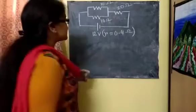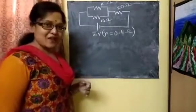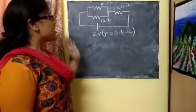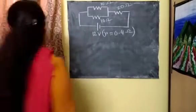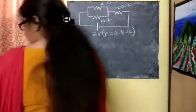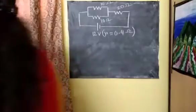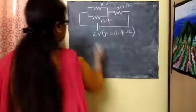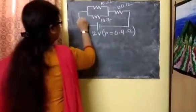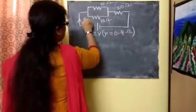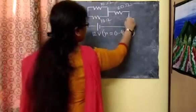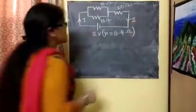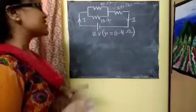Hello students, this is a continuation part of the previous video. Here what I have to calculate in this problem: I have to calculate the total current flown through the circuit — meaning current coming in, branching over here, then returning. So, total current flown through the circuit.